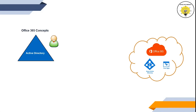Now let's assume this company has recently signed up for Office 365. They now have an Office 365 tenant along with their on-premise Active Directory. Their requirement is to have this Active Directory account available in Office 365, so they can assign an Office 365 license and the user can use Office 365 services.